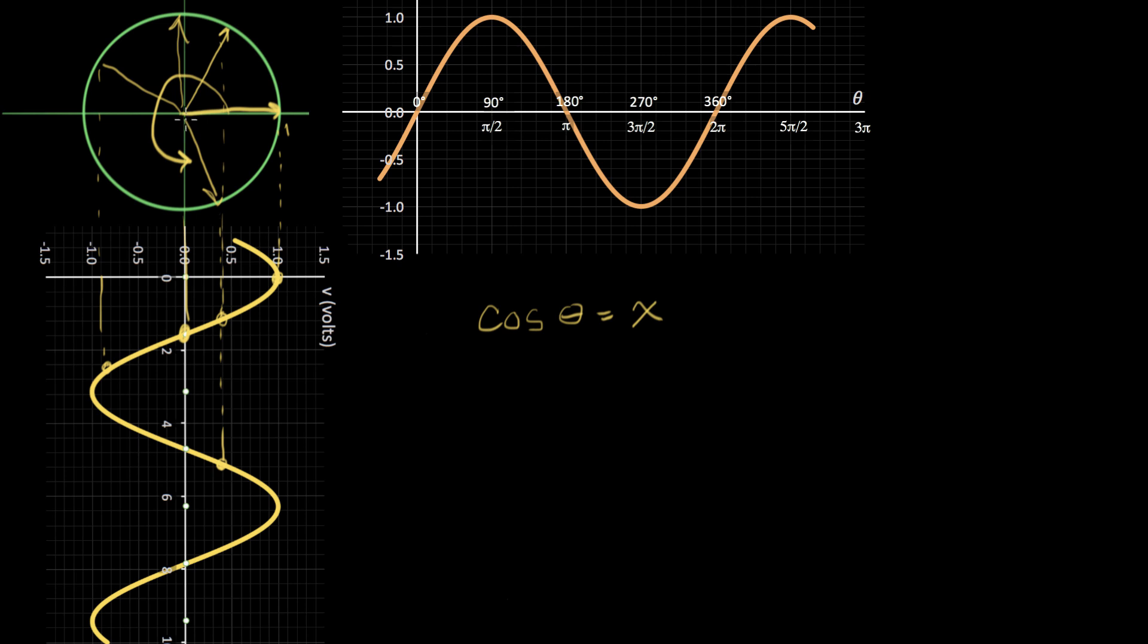And when we get back to zero again, the projection is to this point here. So that's a way to visualize the cosine curve getting generated by a vector rotating around the circle.